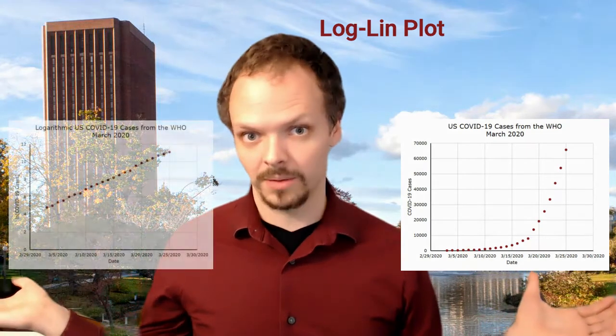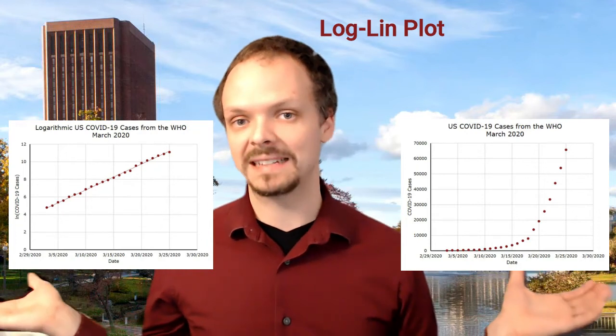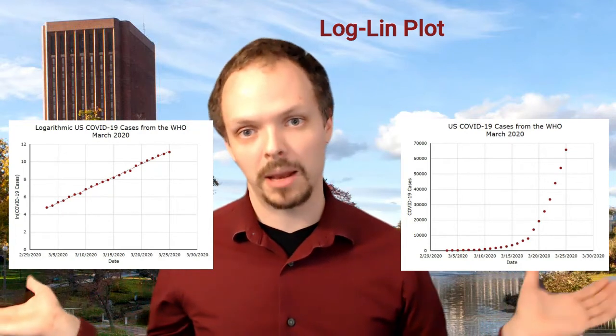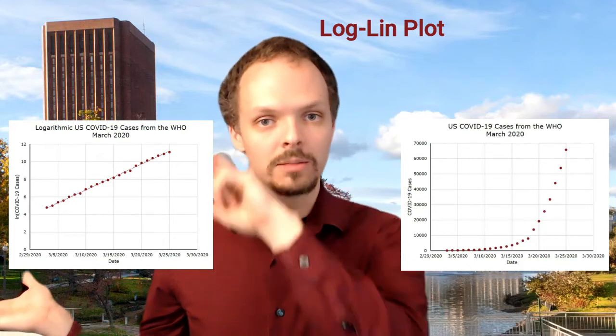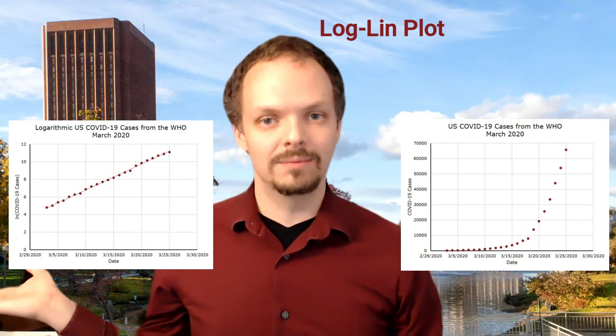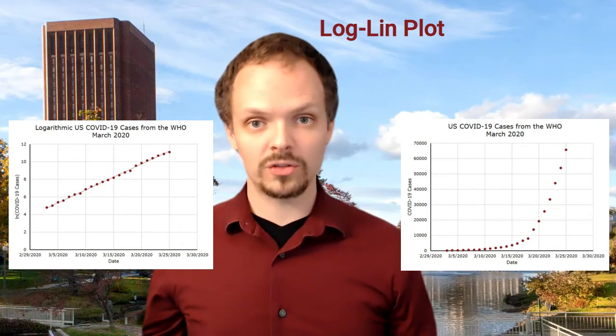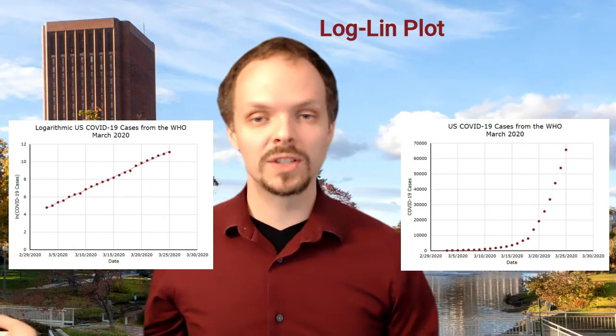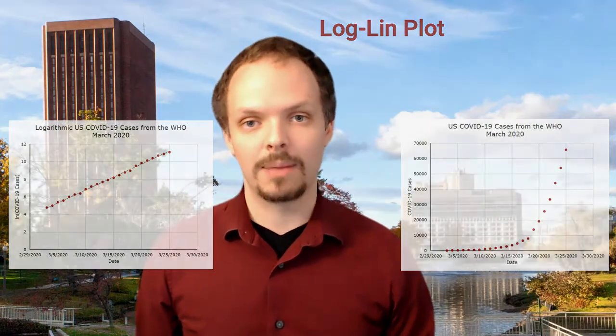In the case of a log-lin plot, a good set of data to understand these is the number of COVID-19 cases in the United States in March 2020, according to the WHO. When you plot these, the result is this exponential-looking curve. We don't know how to fit exponentials. However, if instead on the vertical axis I take the number of cases and instead plot the natural logarithm of the number of cases — log base e, where e is 2.71... — versus the date, the result is a nice straight line. And we know how to fit straight lines, so we can fit these data using the tools that we have and use that to learn something about what to do next.